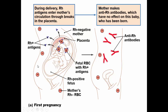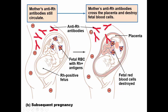Here we see an RH-negative mom giving birth to an RH-positive fetus. At the time of delivery, there's a little exchange between the mother and the baby, and mom produces RH antibody. In the second pregnancy, the RH antibodies can cross to the second baby. If the second baby is RH-positive, those antibodies will bind to the baby's blood, causing destruction of the baby's blood cells.